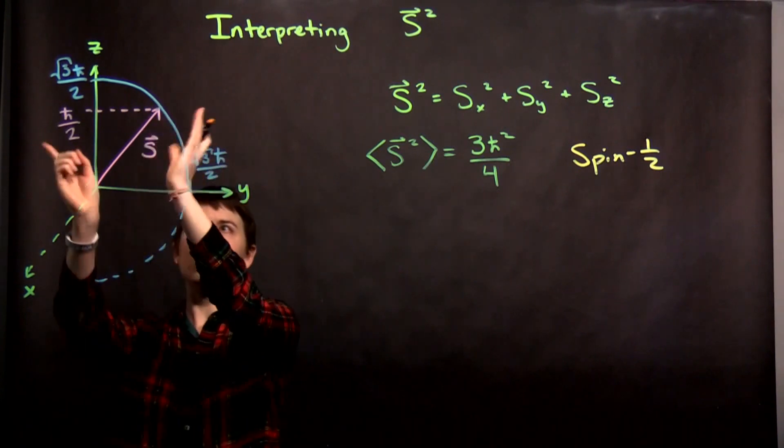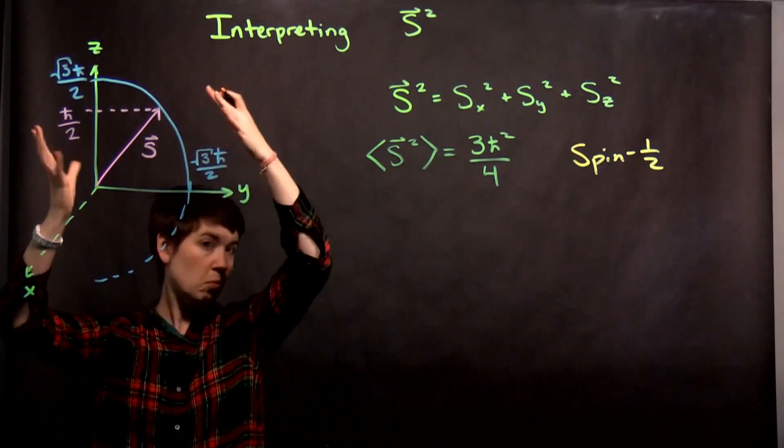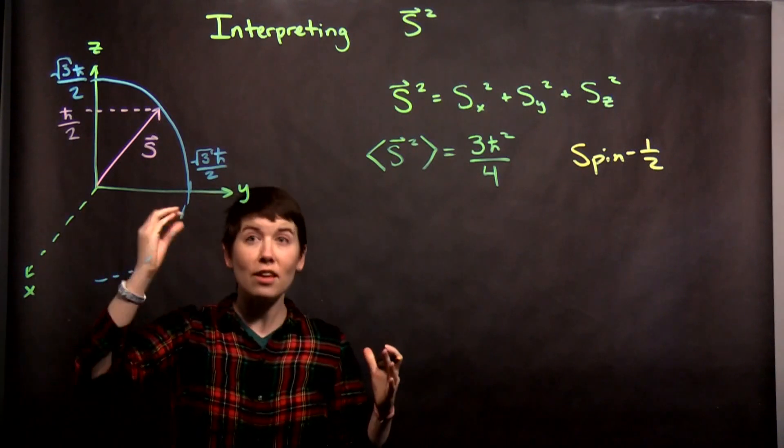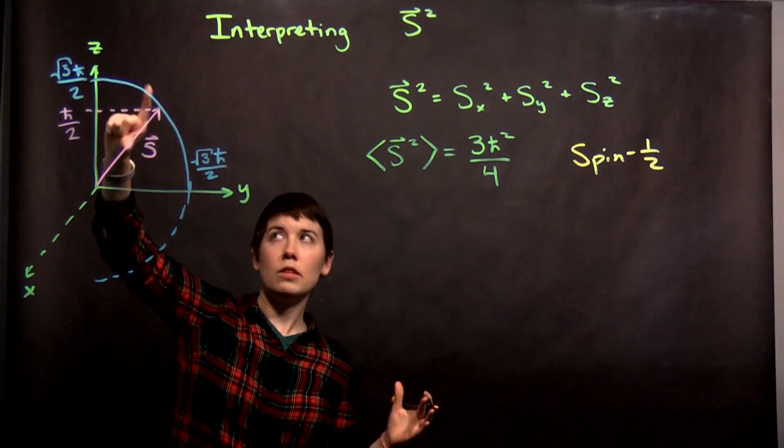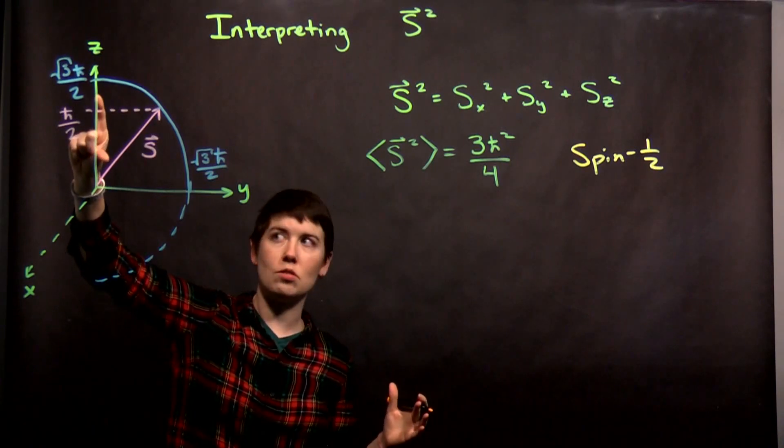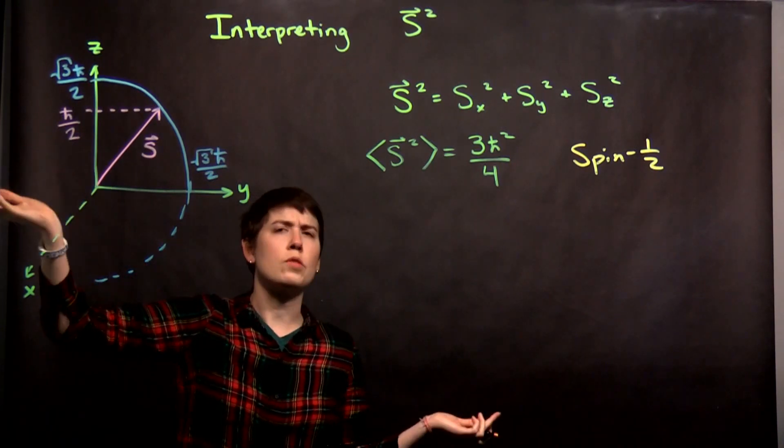Again, if we imagine rotating it out this way, we don't know x and y. And again, if we measured that our spin lied exactly on the z-axis, we would know x and y. Those would be zero then.